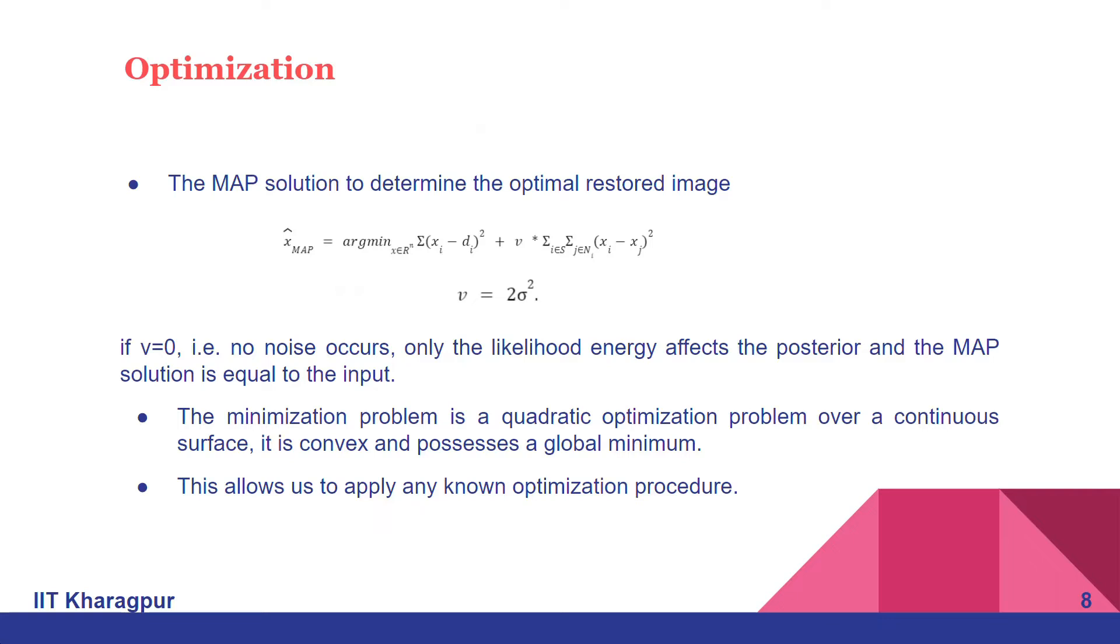The summation of (X_i - D_i)² plus V with some constant term into the summation of (X_i - X_j)² for all neighbors of X_i, where V here equals 2 sigma squared.